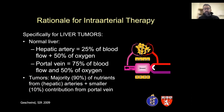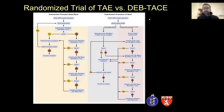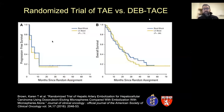Switching gears to trans-arterial embolization. The rationale for intra-arterial therapy for liver tumors: the normal liver gets about 75% of its blood supply from the portal vein and 25% from the hepatic artery, whereas tumors get 90% of their blood supply from arteries. A randomized trial compared trans-arterial embolization to drug-eluting bead chemoembolization using escalating particle sizes from 300–500 microns up to 700–900 microns, followed by 100-micron PVA for complete embolization — compared to LC Beads (100–300 microns) loaded with doxorubicin. There was no difference in progression-free survival or overall survival between trans-arterial embolization and DEB-TACE.